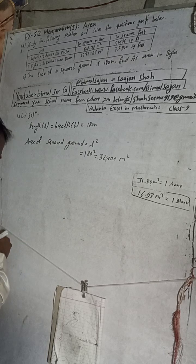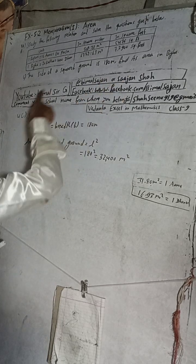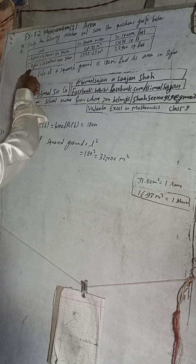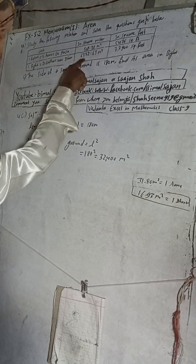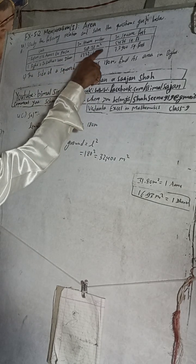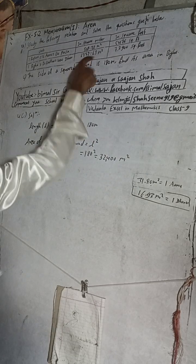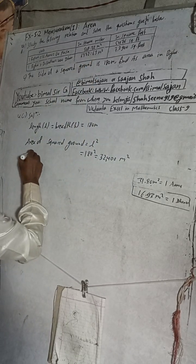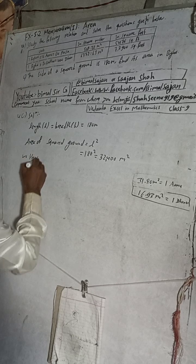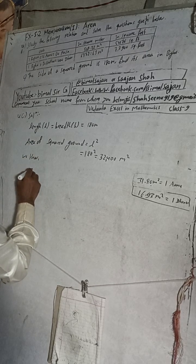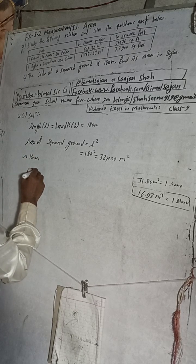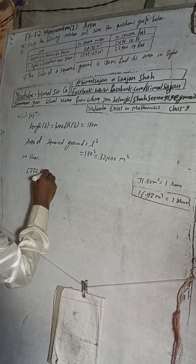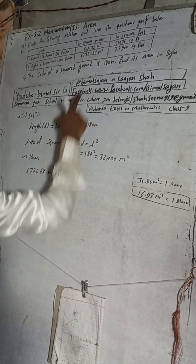Now we have to convert this into Vekha. So you see the relation for Vekha: 1 Vekha is equal to 6772.63 meter square.